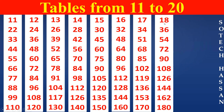18th table. 18 ones are 18. 18 twos are 36. 18 threes are 54. 18 fours are 72. 18 fives are 90.